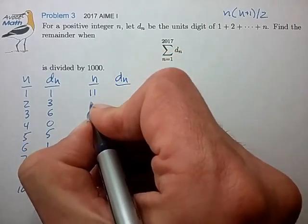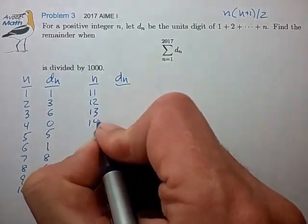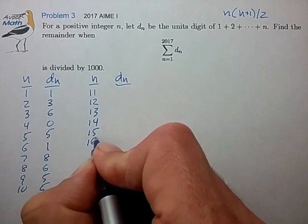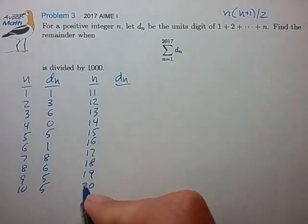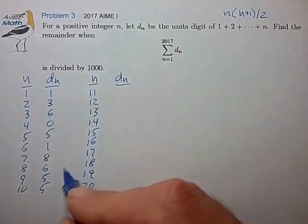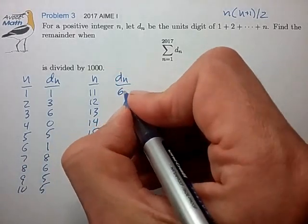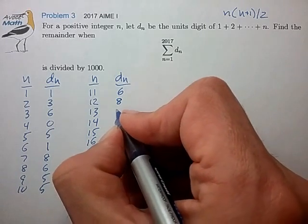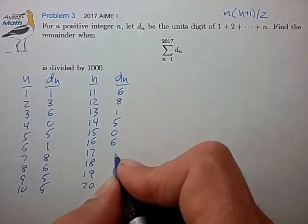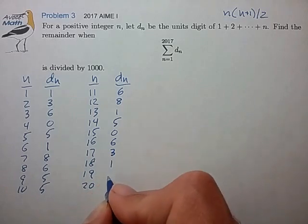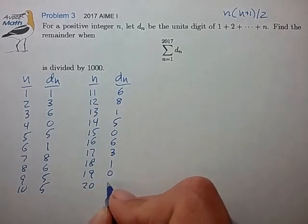n of 11, 12. Let's go out to 20. Okay, so here again we can ignore the tens digit, and that makes generating this list pretty quick. Add 2 gives you 8, 1, 5, 0, 6, 3, 1, 0, 0.